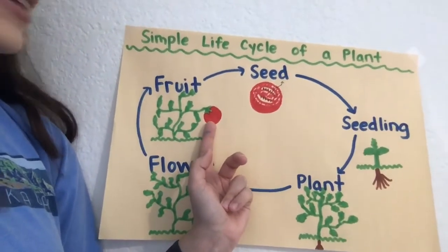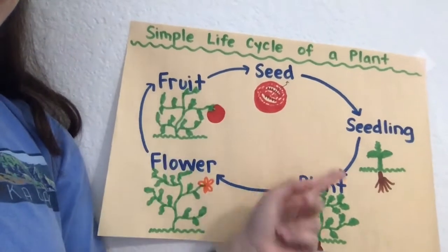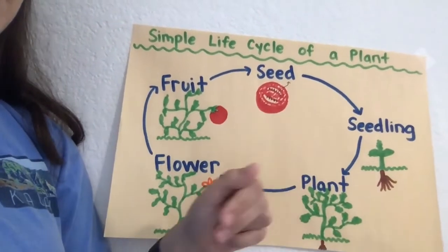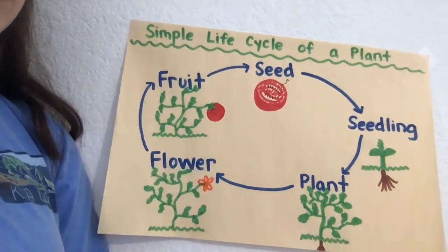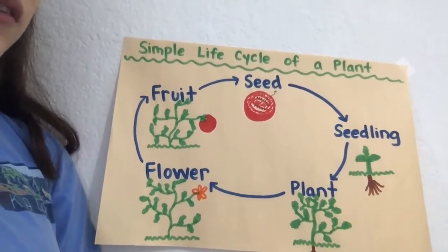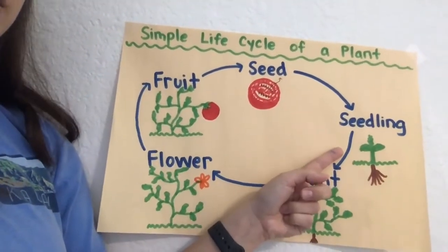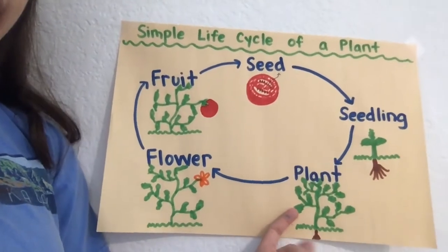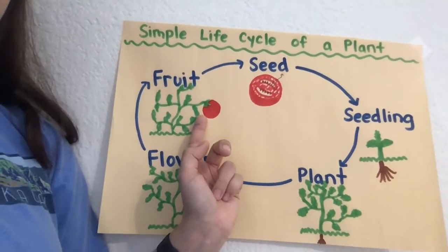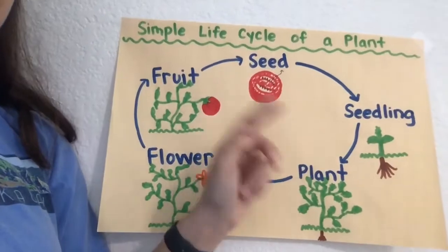If you cut open that tomato again you can get a seed out, plant it, it becomes a seedling, and it just repeats over and over again. Not all plants have flowers or fruits, but for those that do, this is what the cycle looks like. There are lots of fruits — strawberries, bananas, grapes — they all start off as a seed, grow into a seedling, become an adult plant, bloom a flower, and that flower turns into the fruit. Then you plant the seeds again and it repeats.